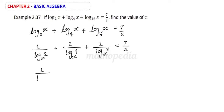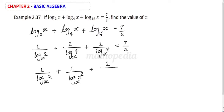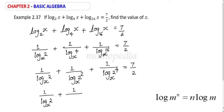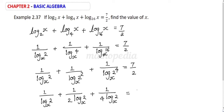This is equal to 1 by log 2 base x plus 1 by log 2 squared base x plus 1 by log 2 power 4 base x equal to 7 by 2. Using logarithm power rules, this becomes 1 by log 2 base x plus 1 by 2 log 2 base x plus 1 by 4 log 2 base x equal to 7 by 2.